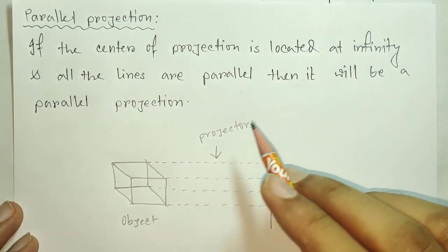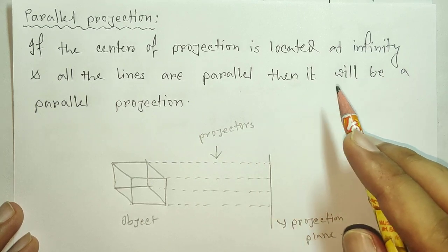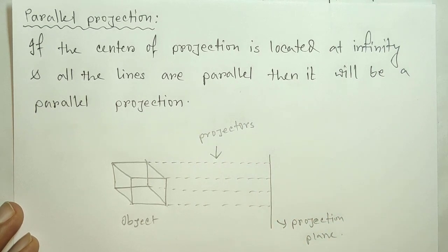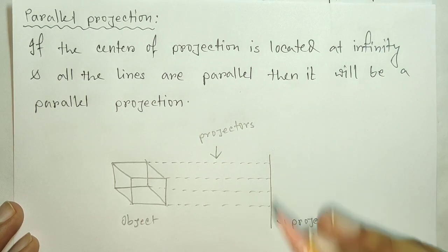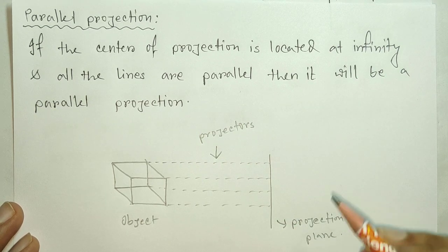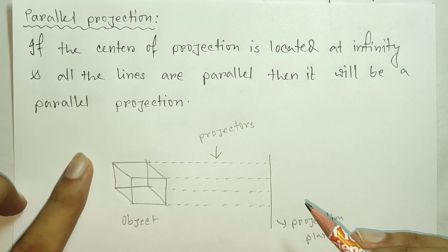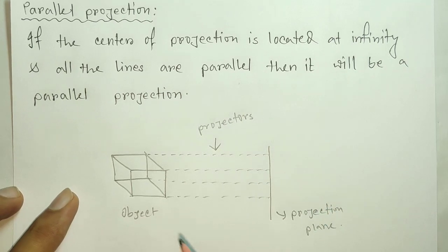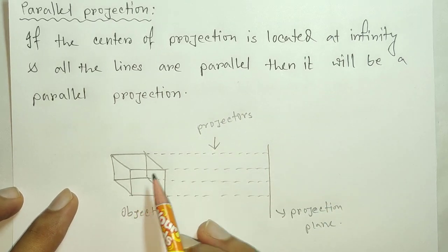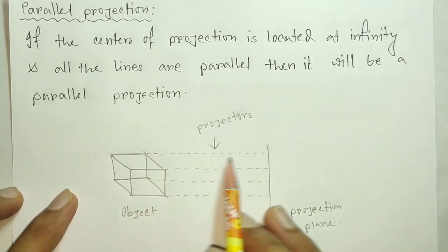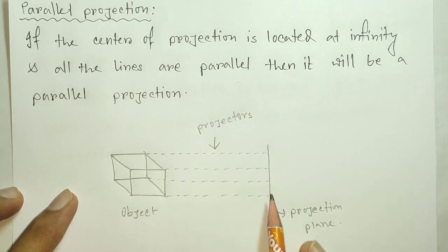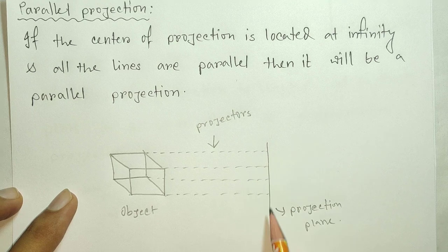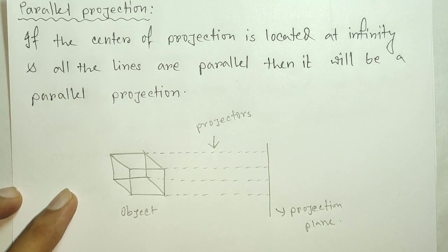If the center of projection is located at infinity and the projector lines are parallel, then it will be a parallel projection.